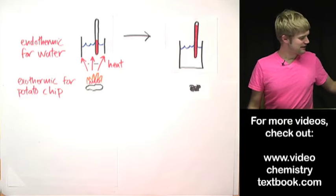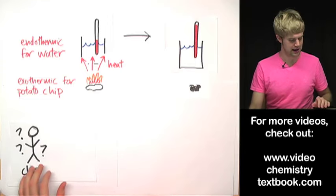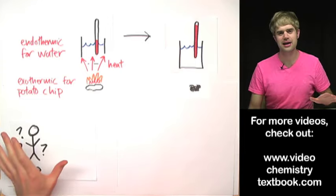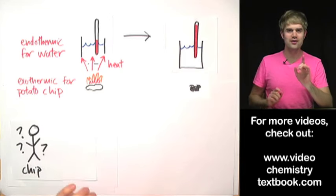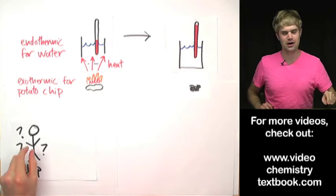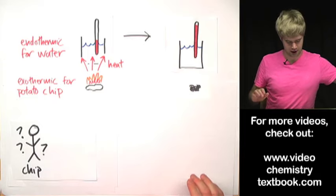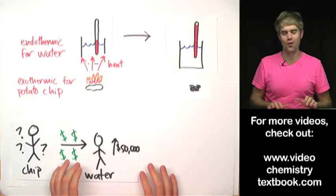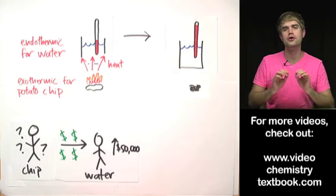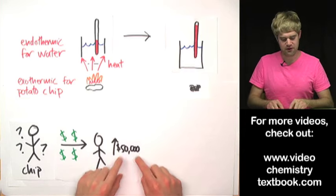Here's an example. Let's say we have a guy named Chip and we want to know how much money he has but we can't look at his bank accounts, we can't check his wallet, we can't do anything. The only thing we can do is we can take Chip and we can make him give all of his money to another guy by the name of Water. So Chip transfers all of his money to Water and then we look at Water's bank account and we see that Water's bank account went up by $50,000.